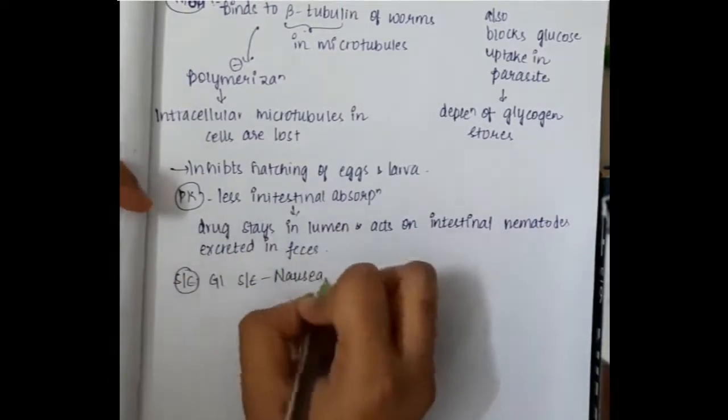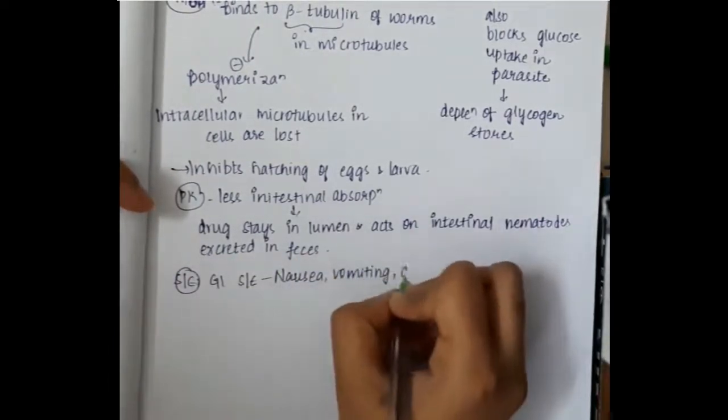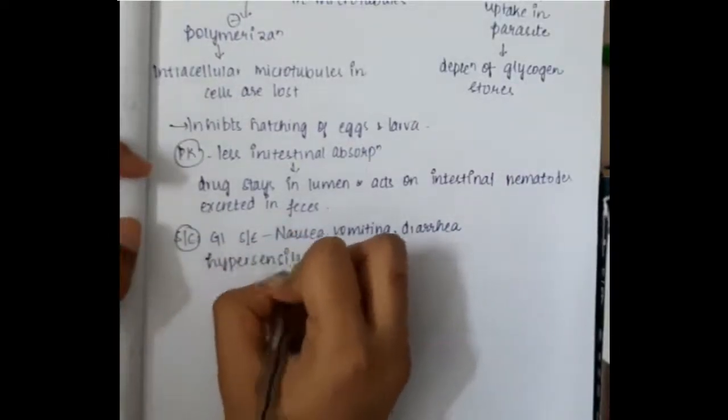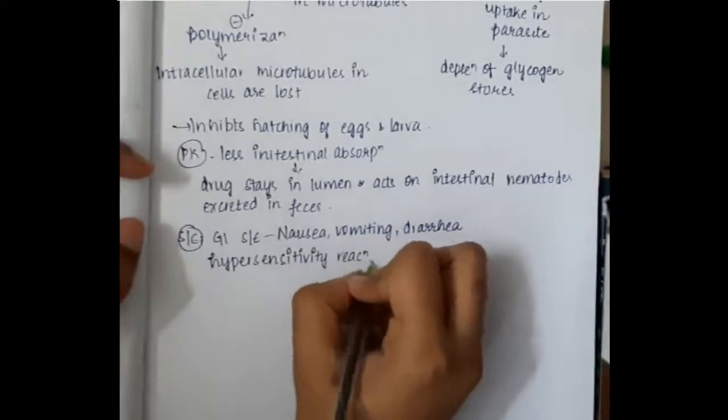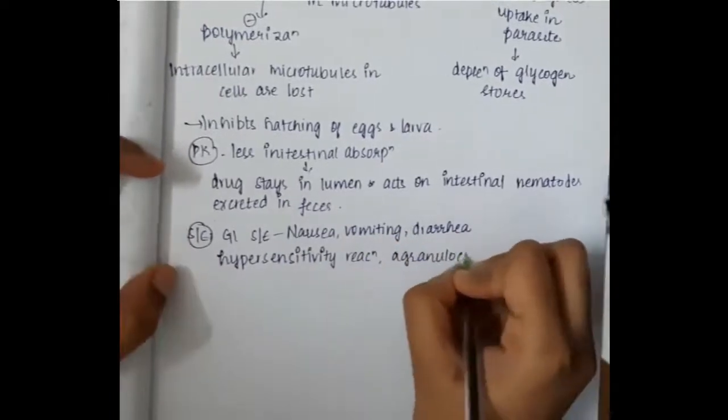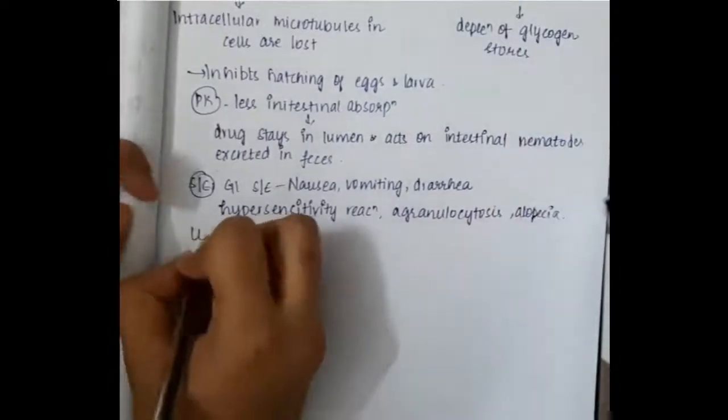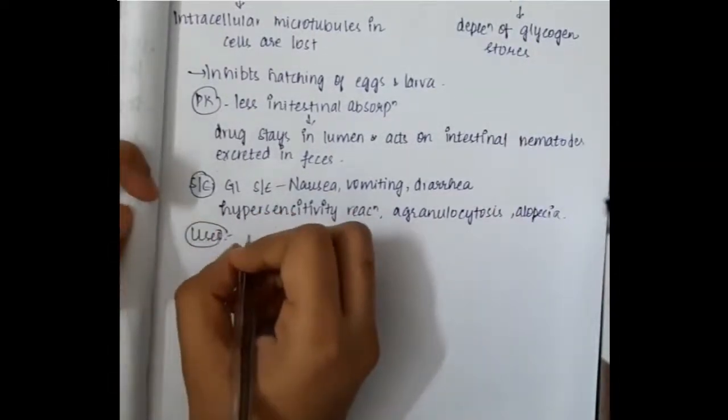Side effects: it causes GI side effects like nausea, vomiting, and diarrhea. It also causes hypersensitivity reactions, agranulocytosis, and alopecia.